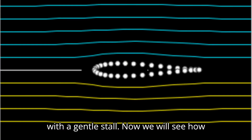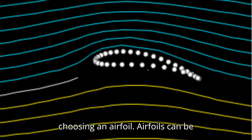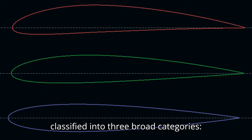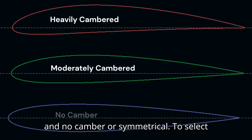Now we will see how these factors come into play while choosing an airfoil. Airfoils can be classified into three broad categories: heavily cambered, moderately cambered, and no camber or symmetrical.